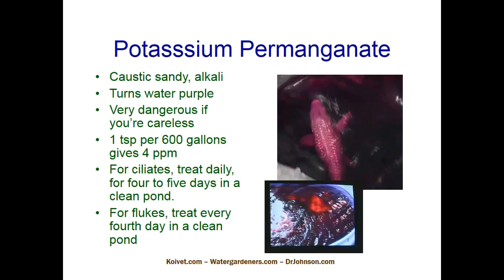Potassium permanganate is a dark purple powder; it turns the water pink while it's active. Once it has spent its energy on the parasites, it turns to an amber or tea color. Important note: if you treat with potassium permanganate and the water turns brown cloudy, you've got a major water change to do — fish do not thrive in brown cloudy water. That usually means there was an overabundance of organic material, and the tank or pond started too dirty for the first treatment. If the water's brown cloudy, do a major water change.